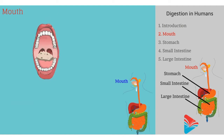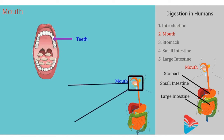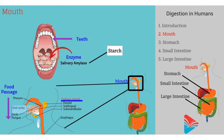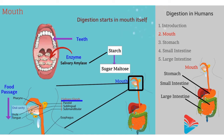In the mouth, large food is broken down into small particles with the help of teeth. Saliva is secreted by salivary glands, and the enzyme present in the mouth is salivary amylase, which converts starch into sugar maltose. Hence, digestion starts in the mouth itself.